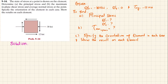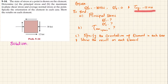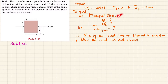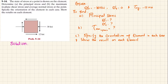From the figure, the given data is: σx = -30 ksi, σy = 0, and τxy = -12 ksi. We have to find the principal stresses σ1 and σ2, and then find the maximum in-plane shear stress as well as the average normal stress.